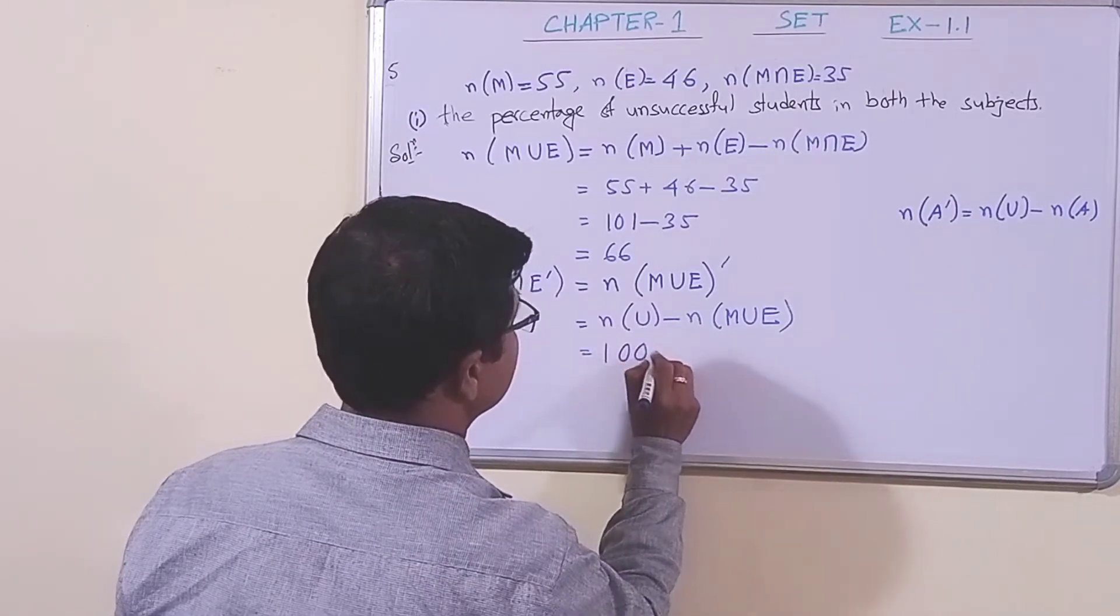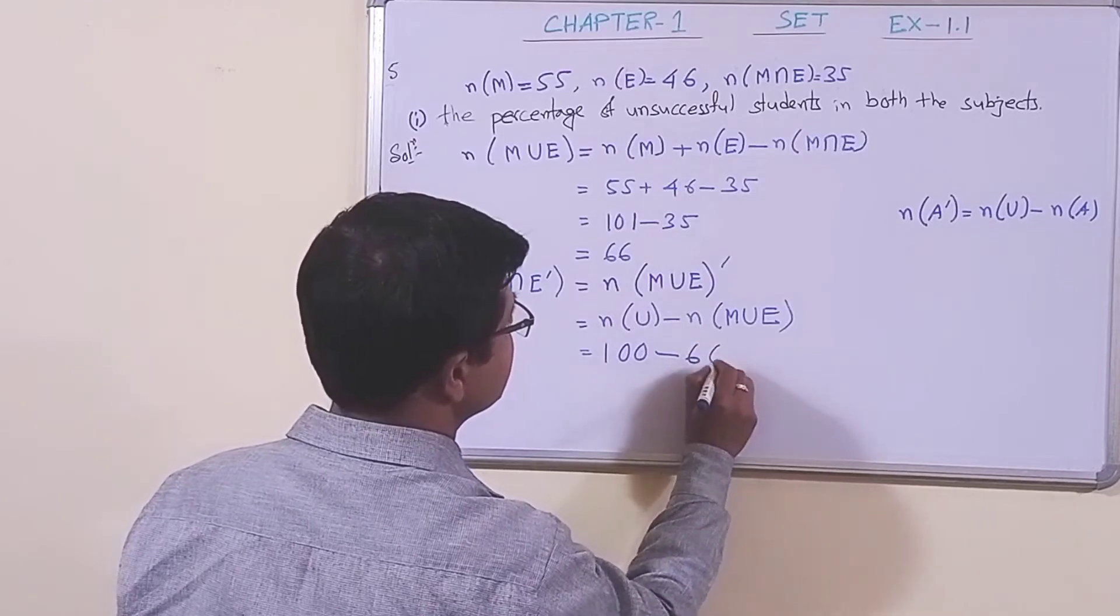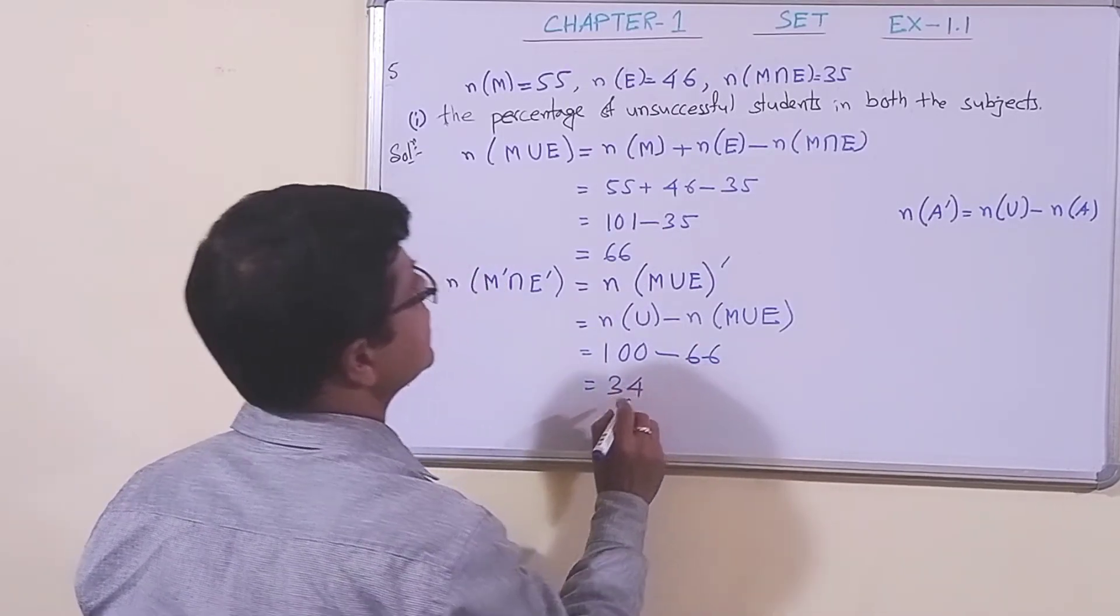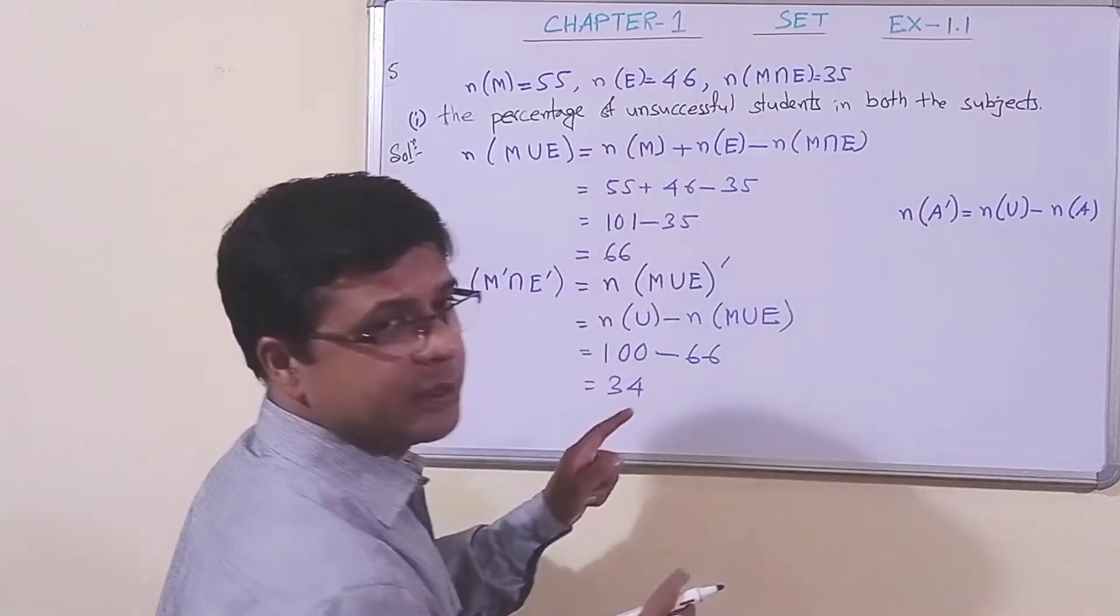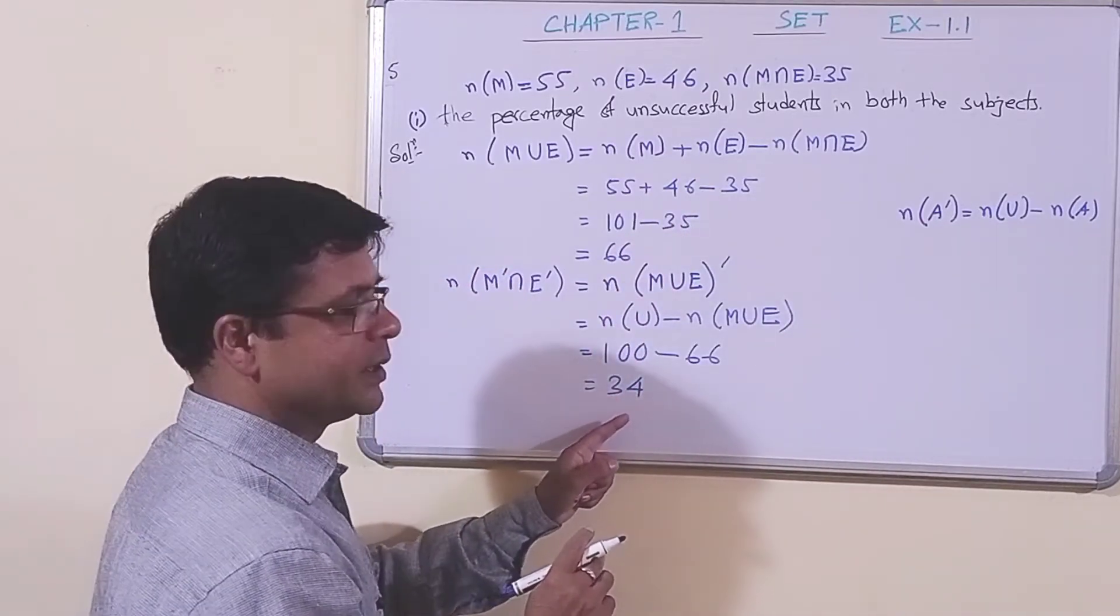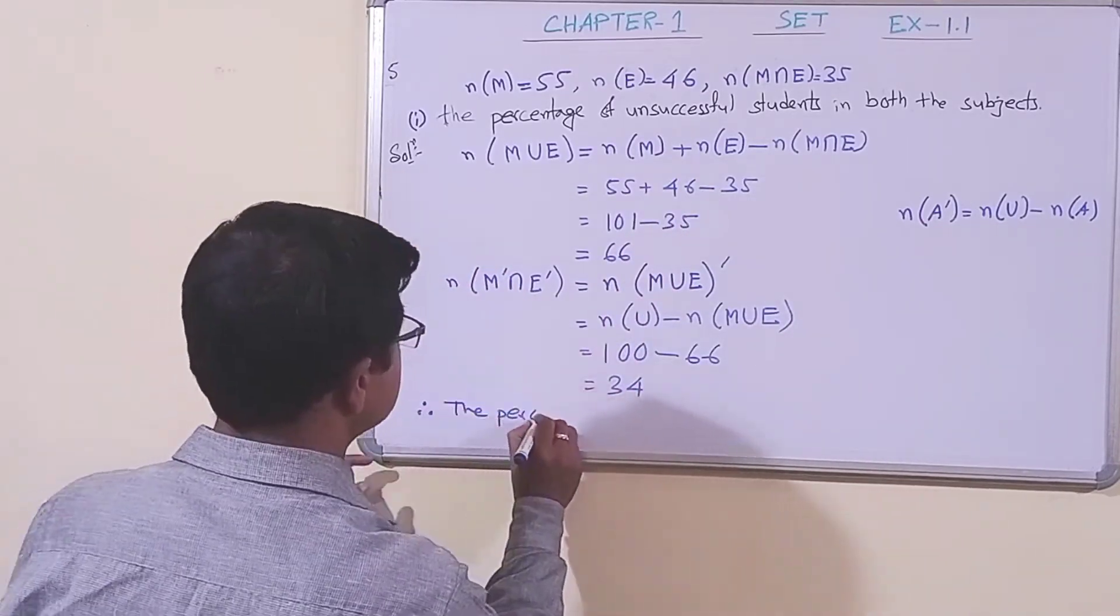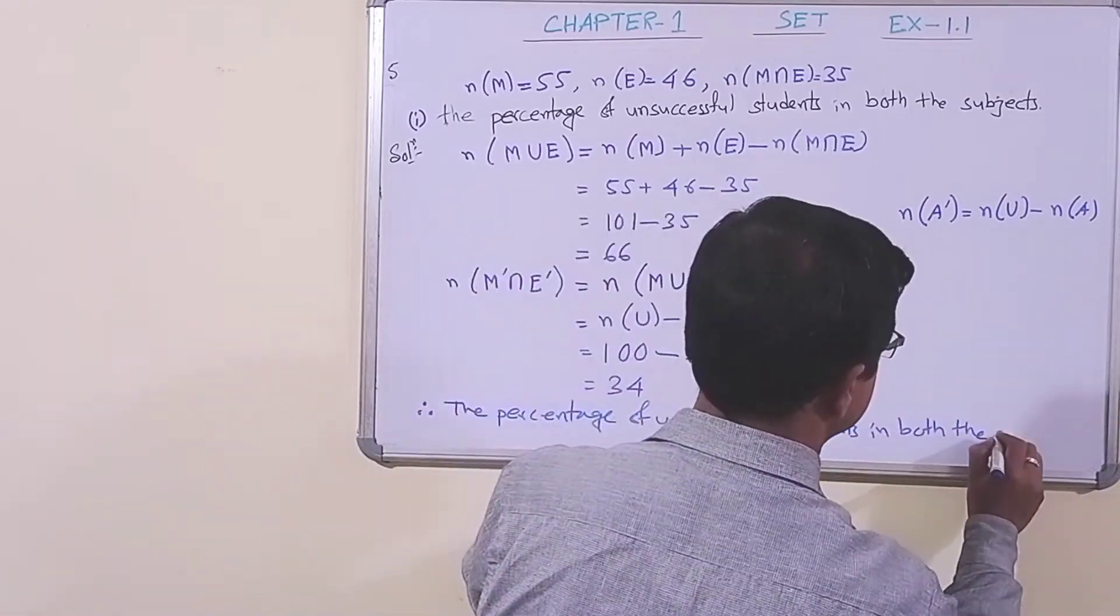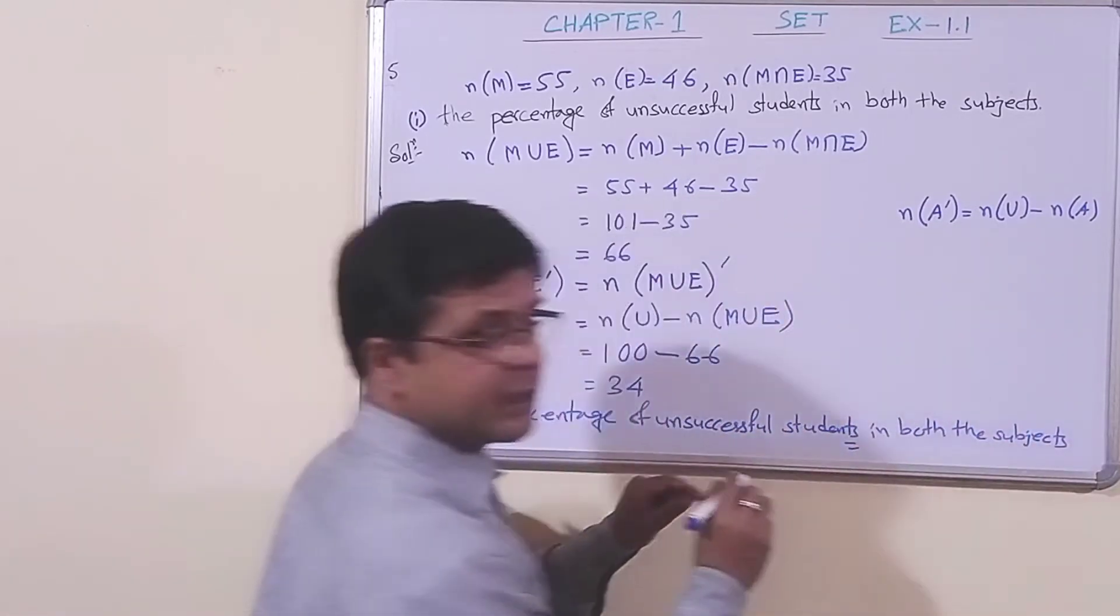100. And what is the value of n(M∪E)? 66. So, if we subtract: 100 - 66 = 34. Therefore, the percentage of unsuccessful students in both subjects is 34 percent.